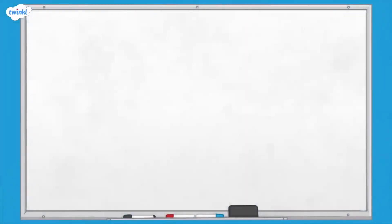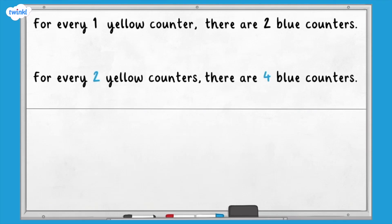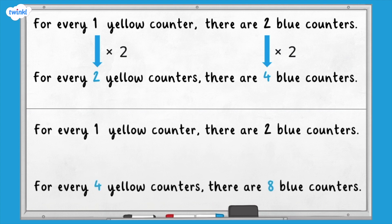If we look at the numbers in our ratio sentences we can look for patterns. When we double the number of yellow counters we also double the number of blue counters. If we multiply the number of yellow counters by 4 we also multiply the number of blue counters by 4.